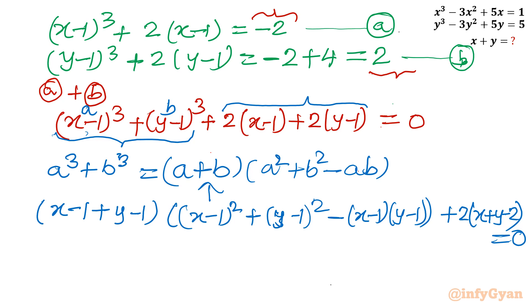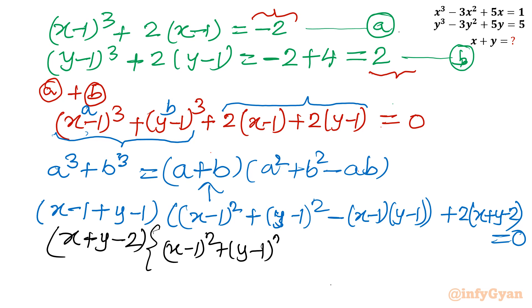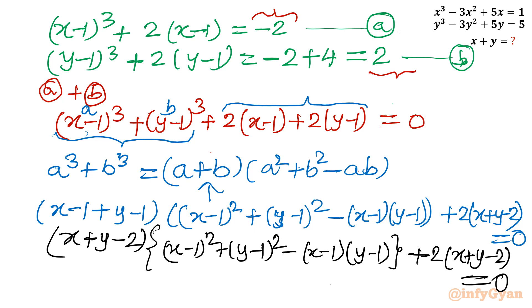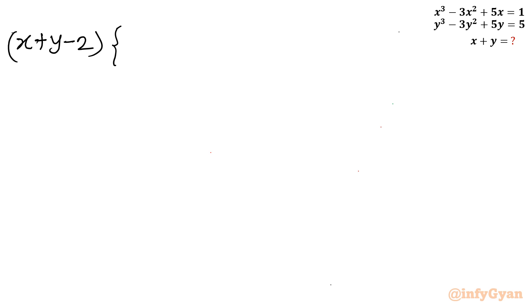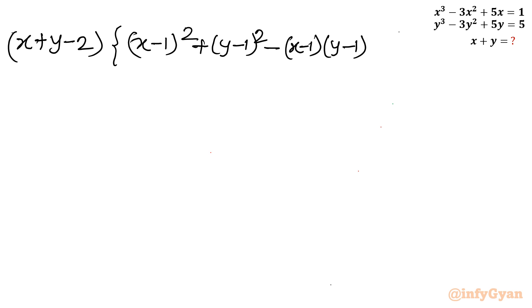Now you can see (x+y-2) is common. Taking it completely common: (x+y-2) times [(x-1)² + (y-1)² - (x-1)(y-1) + 2] = 0. This is a product equal to zero, so by the zero product property: either (x+y-2) = 0, or the bracket equals 0.